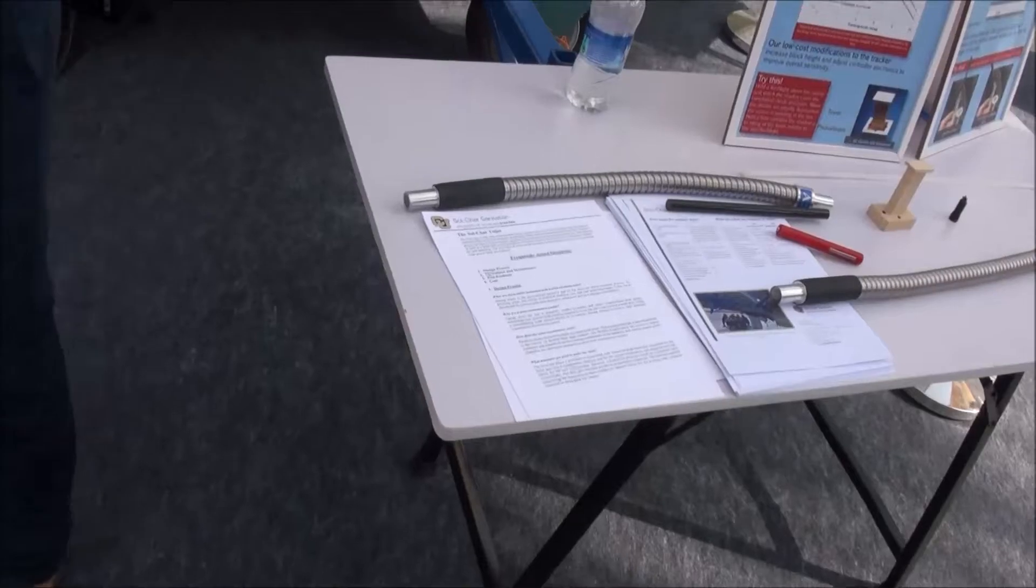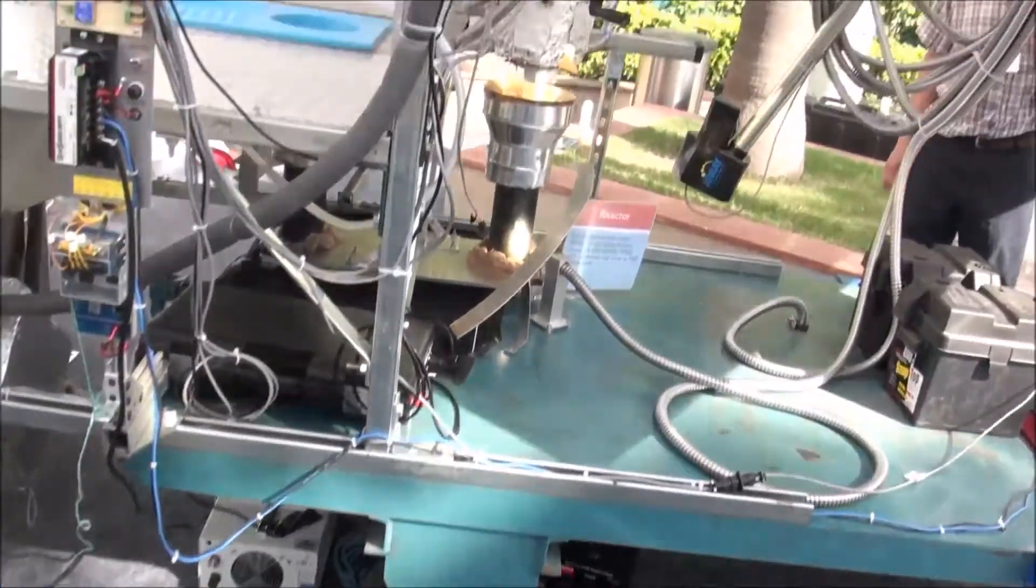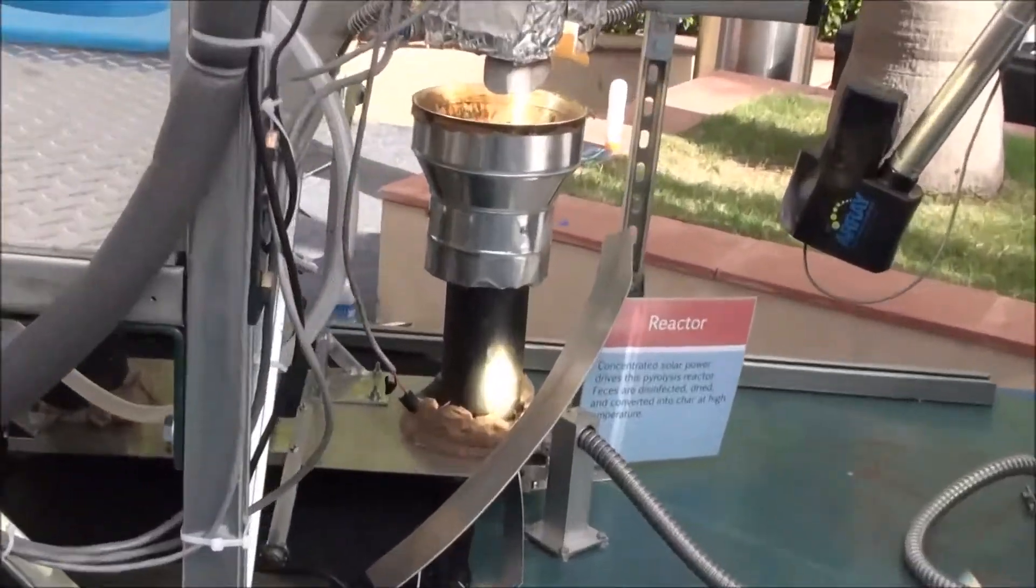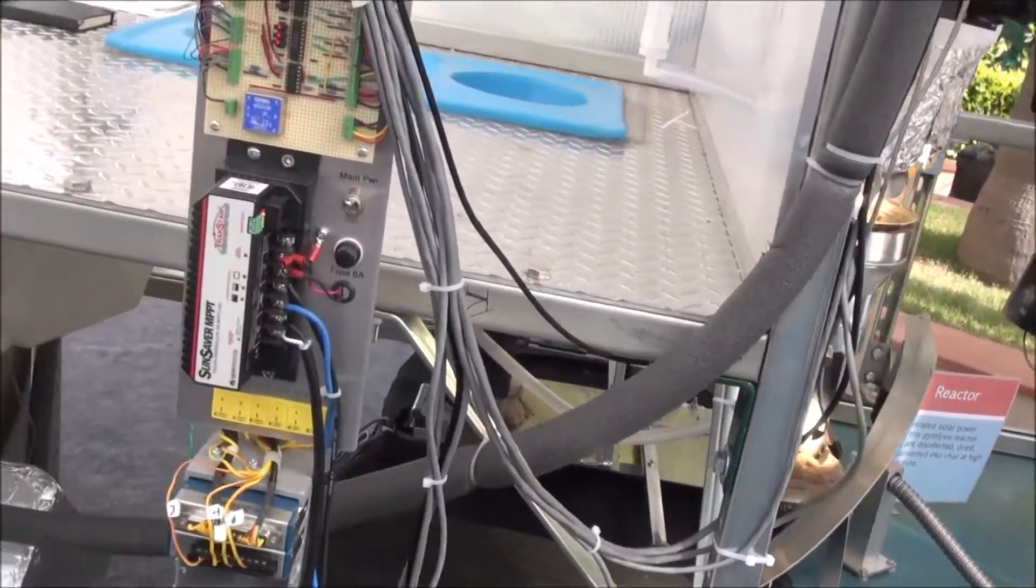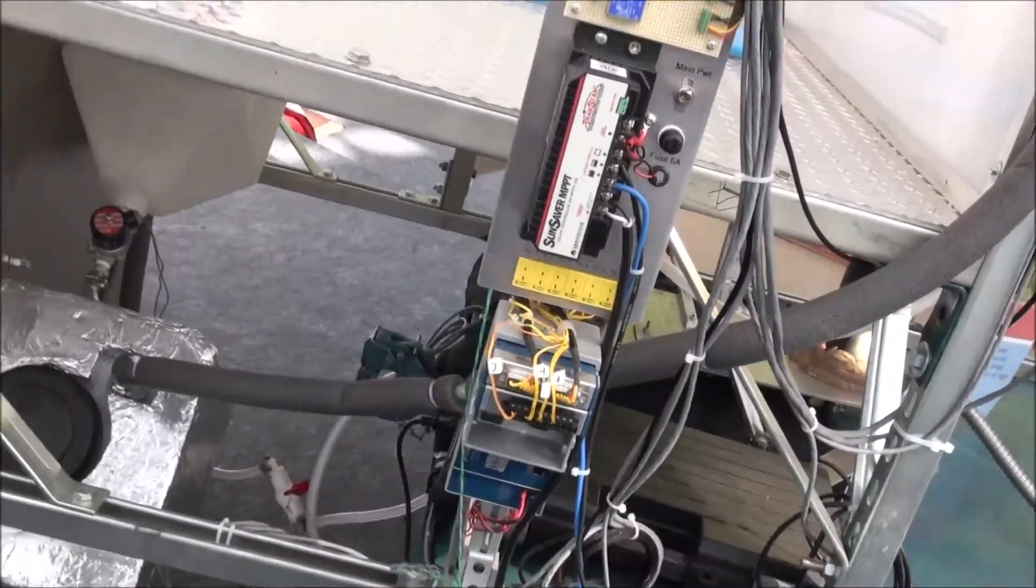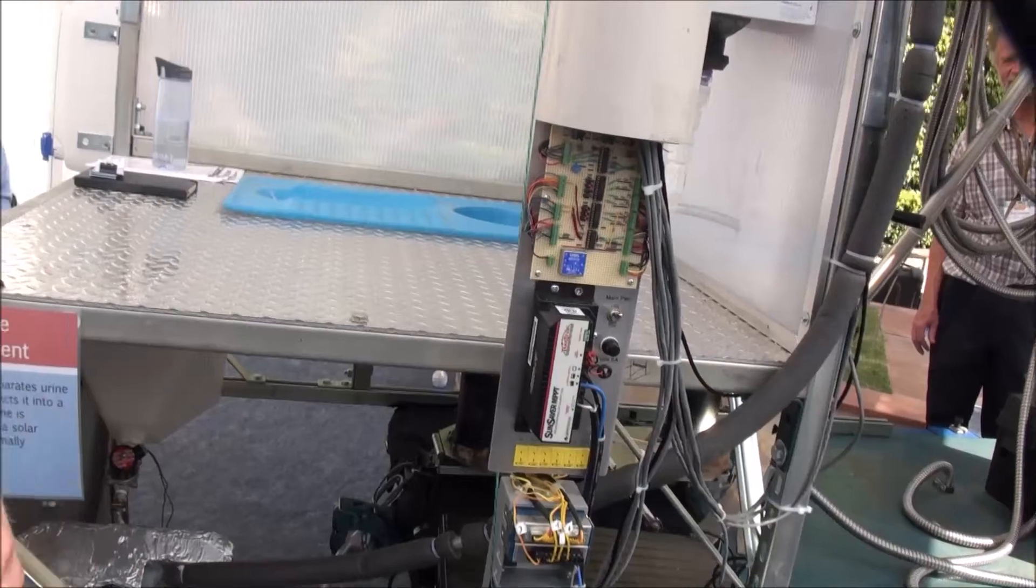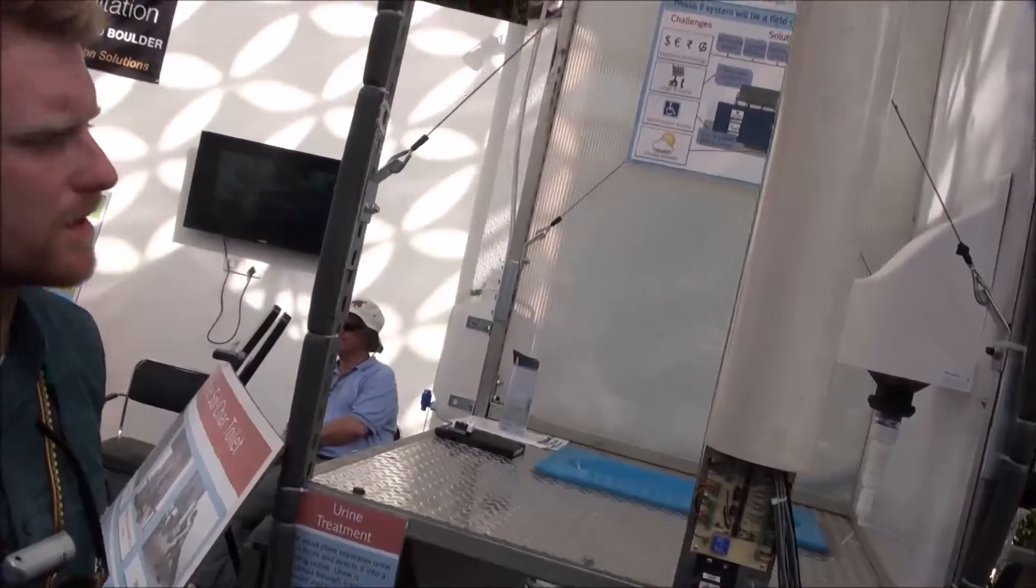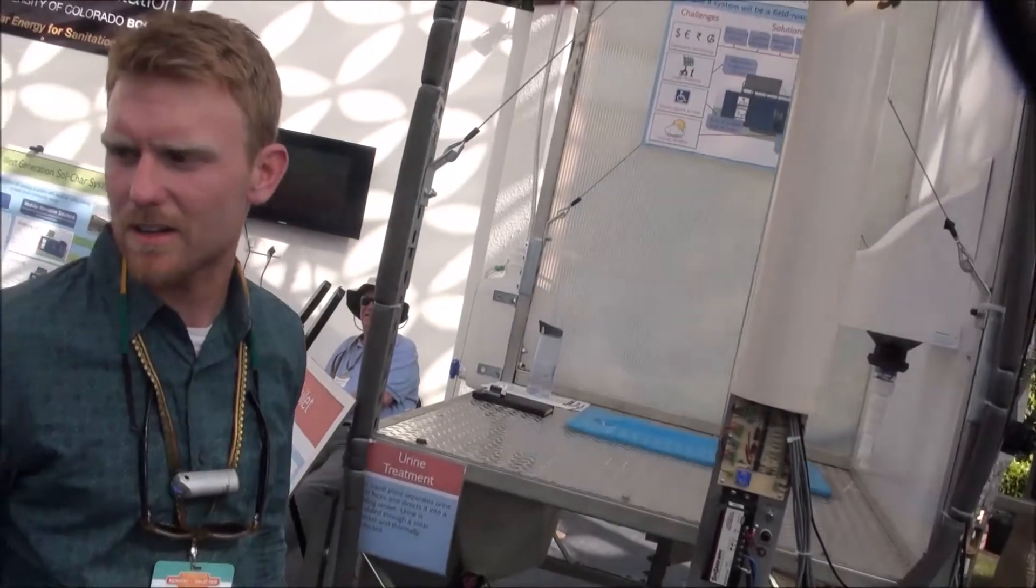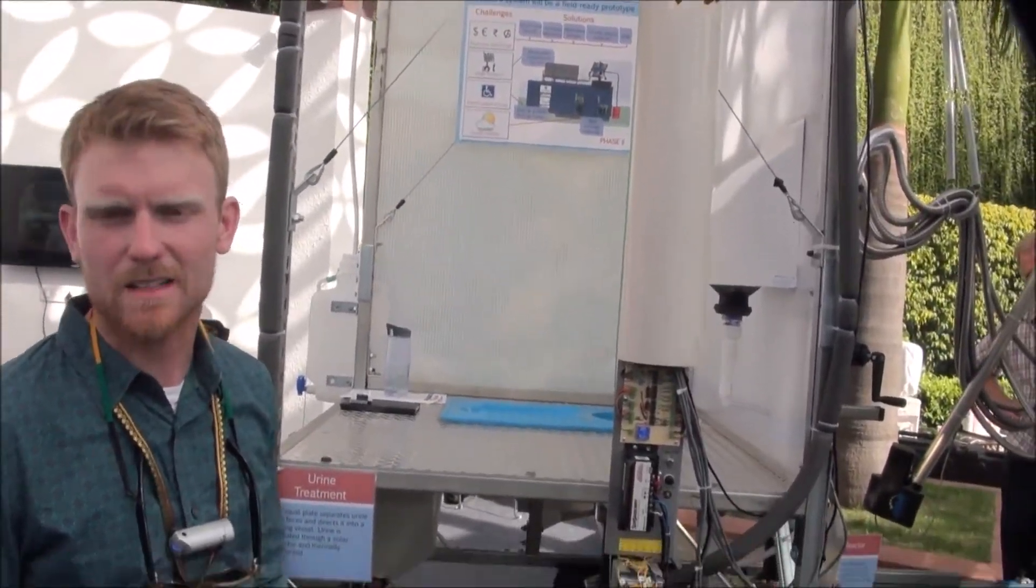This allows us to take the energy all the way to the reactor, wherever it might be. Our system is designed for a urine-diverting squat plate. Urine is diverted to a separate tank that is also treated with solar energy, using a simple solar water heater that brings the urine up to temperatures of 70 degrees Celsius or higher for about an hour, rendering all the pathogens inactive.